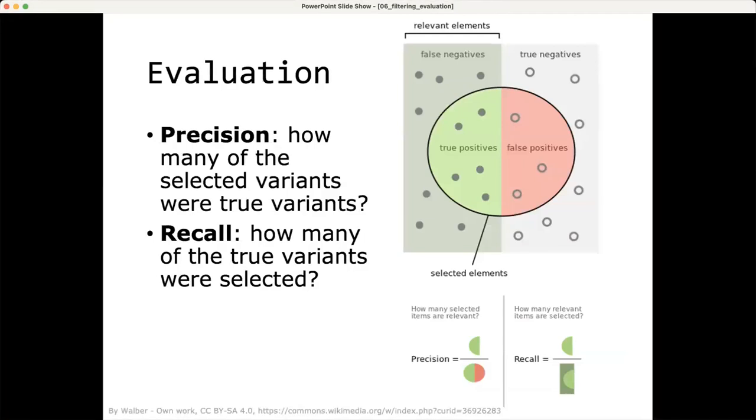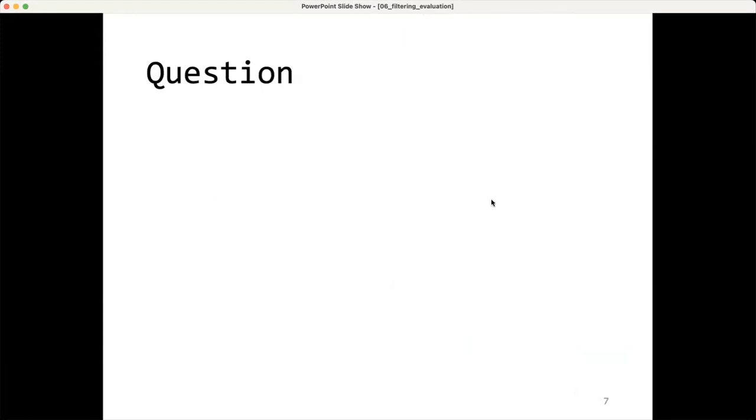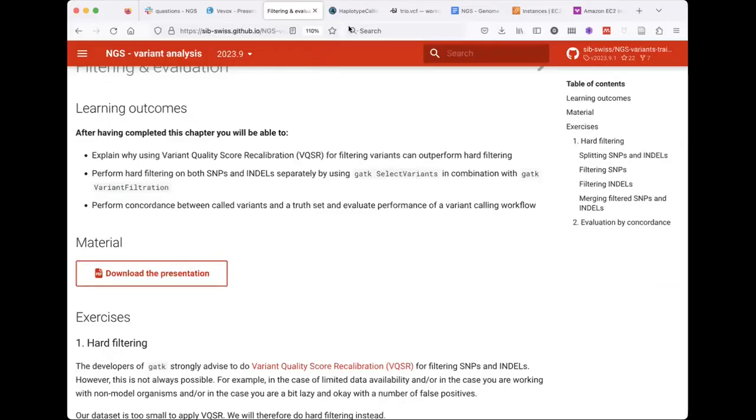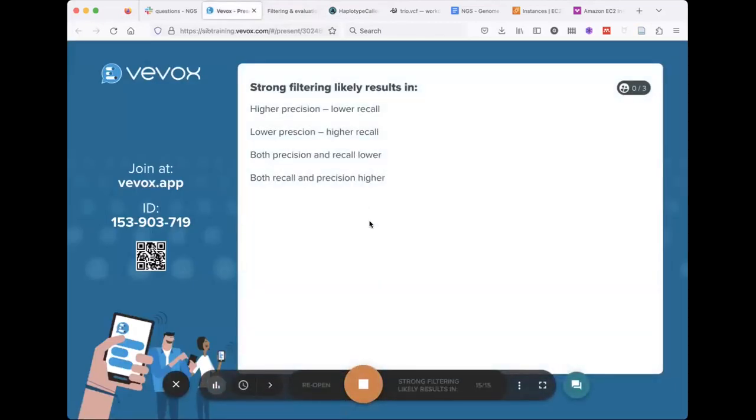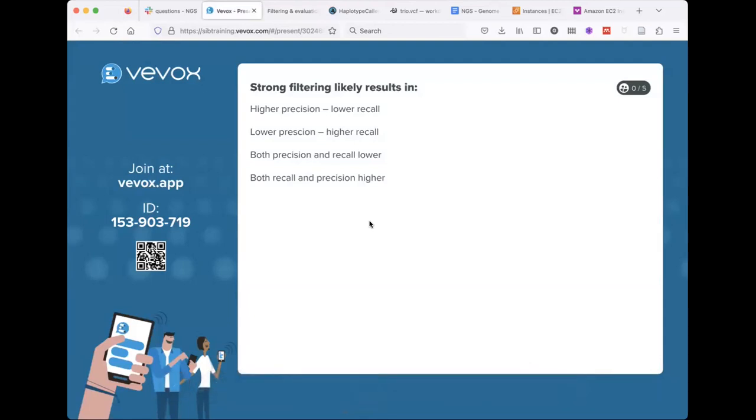So if we are going to evaluate how well we did with filtering our variants, we want to have some evaluation measures. So this is just a recap for what we mean with precision and recall. So with precision, we mean how many of the selected variants were true variants. So do we have a lot of false positives in there? Yes or no. And recall would be how many of the true variants were selected. So were we missing variants? So to check with you, I have a question regarding exactly that.